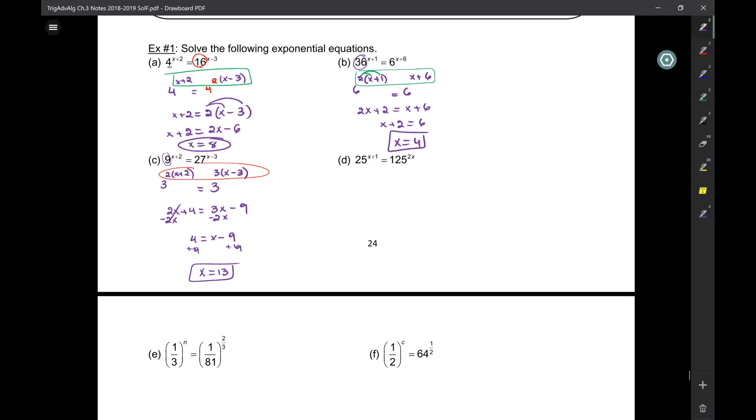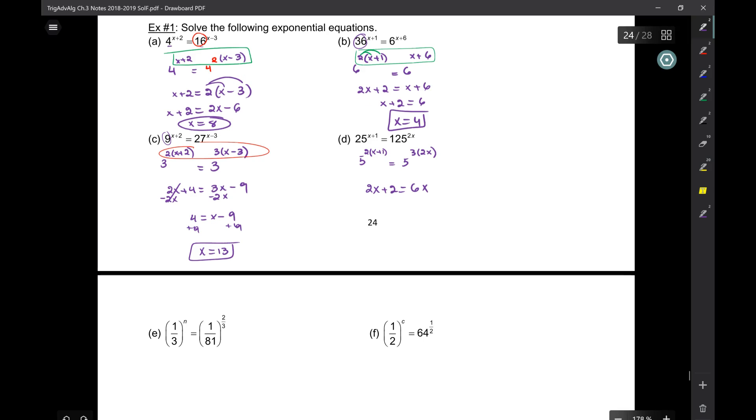What about the 25s? Five squared and five cubed. So two x plus two is six x. Two is four x. And I divide by four. So x is two over four, which is one half. Do you want to start at 0.5 or one half? Either. Doesn't matter.